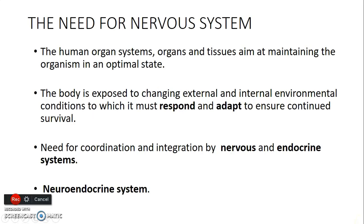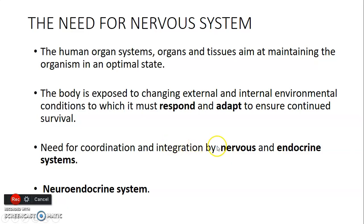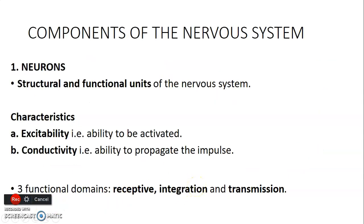There is a need for the nervous system in the body. Tissues that subserve a common function form an organ, and organs that subserve a common function form an organ system. All of these are regulated by the nervous system with an aim of maintaining the organism at an optimal state. The body is also exposed to different environmental conditions, both internally and externally; therefore, a good nervous system enables it to respond and adapt to ensure survival. The nervous system is also required to coordinate and integrate how the nervous system works as well as the endocrine system, forming the neuroendocrine system.